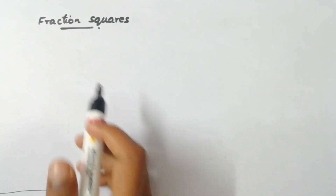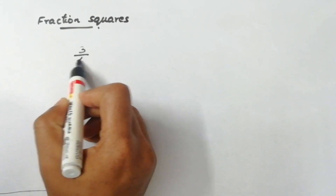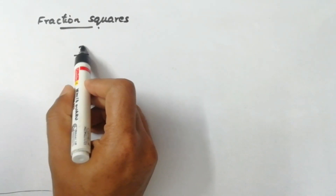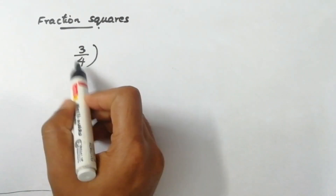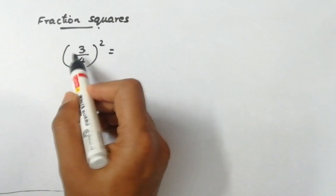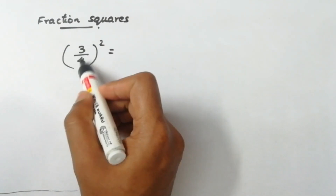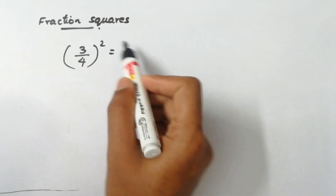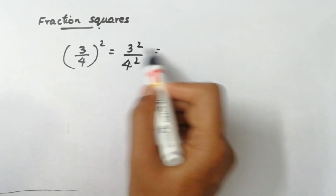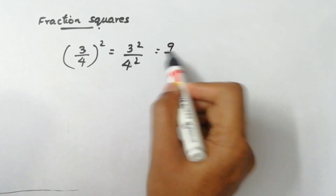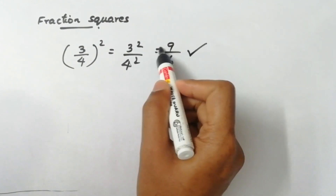Now, we have a fraction square. A fraction is 3 by 4. 3 by 4 is a fraction term. Square is what it is. The fraction is the same term — numerator is the square, then the denominator is the square. 3 square is 9. 4 square is 16. That's the answer.